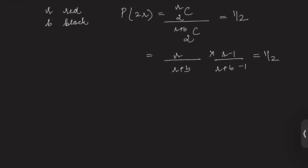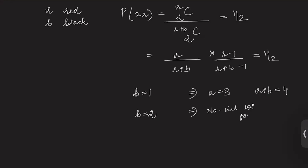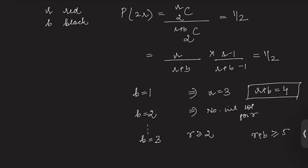We will solve this by hit and trial method. Starting with b equals to one, we solve for r and get the only integer solution r equals to three. Our aim is to minimize r plus b, so r plus b equals to four here. Checking b equals to two gives no integer solution for r. As we increase b, for b equals to three, r must be greater than or equal to two since we need to pick at least two red socks, so r plus b will always be greater than or equal to five. Since we already found r plus b equals to four for b equals to one and r equals to three, this is our solution for the first part.